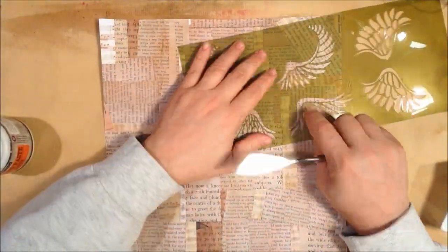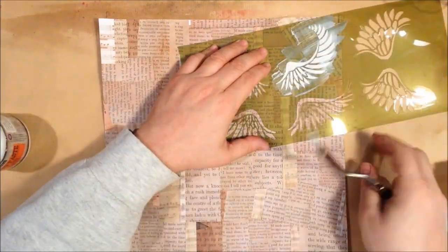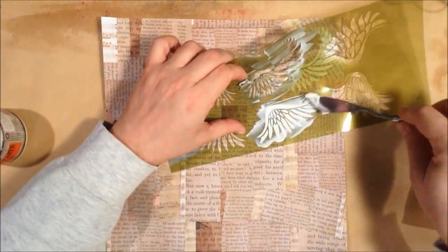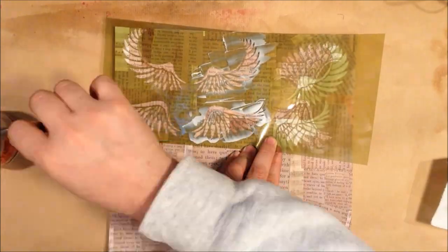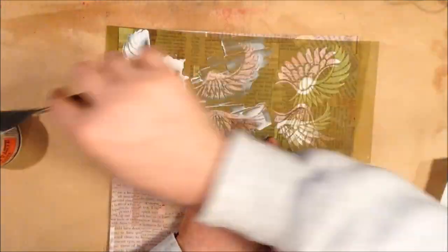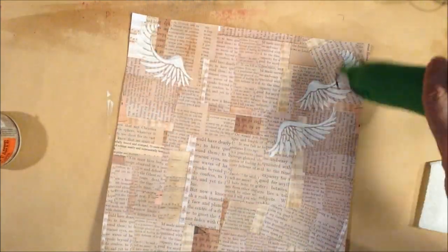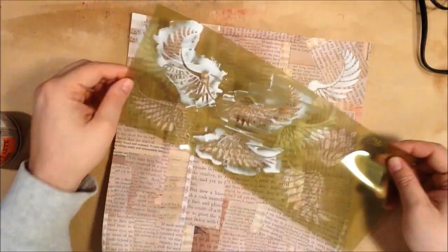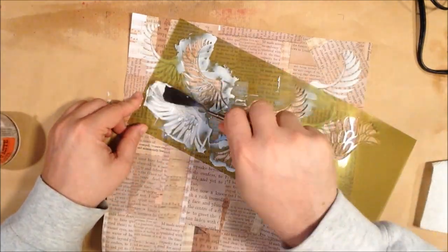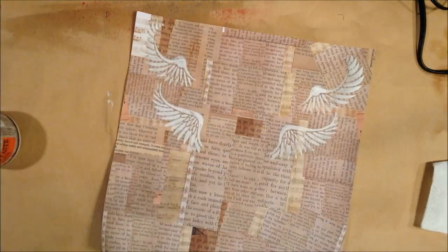I'm using some Prima modeling paste here and a stencil from Delta that has some wings on it. I wanted to do this fourth wing, but I didn't want to mess up the other three, so I dried them off first before I used the stencil for the fourth wing there.